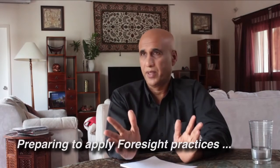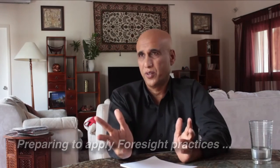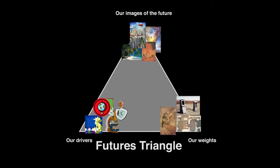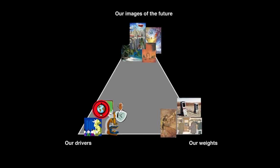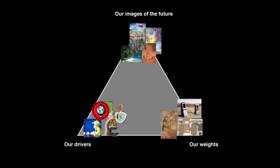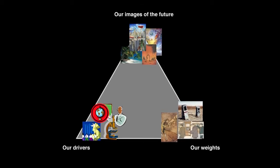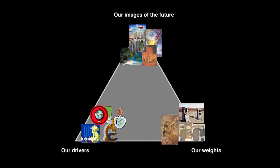I would start with mapping. So you've done the questions — now you ask yourself, use the Futures Triangle. It has three parts: one, what is the preferred image of the future, what does it look like, what are the characteristics? Second, what are the drivers pushing towards there? Third, what are the weights? That gives you a great map of the future. The Futures Triangle is easy, everyone can do it. The pushes are quantitative, the pull is visual, and the weights tend to be qualitative.